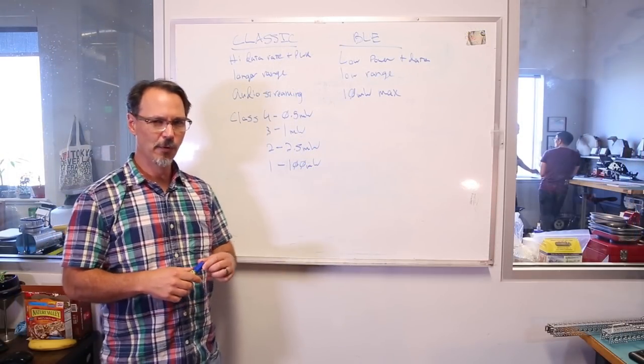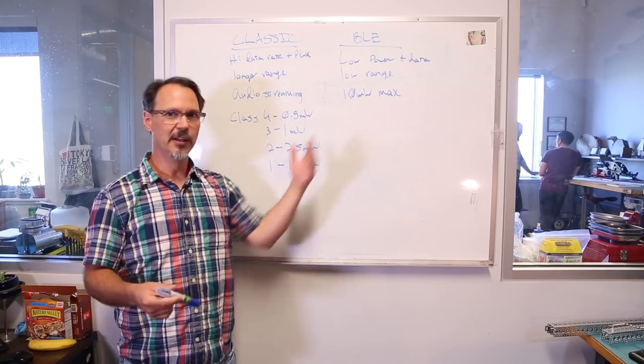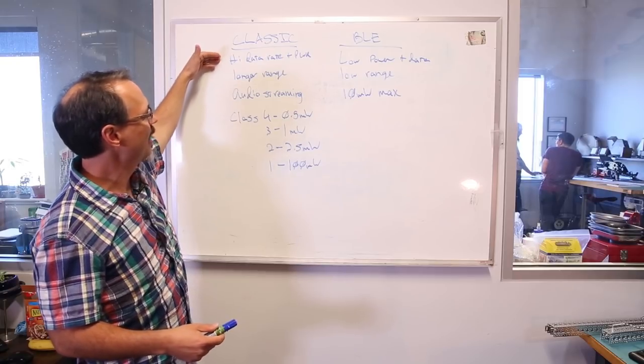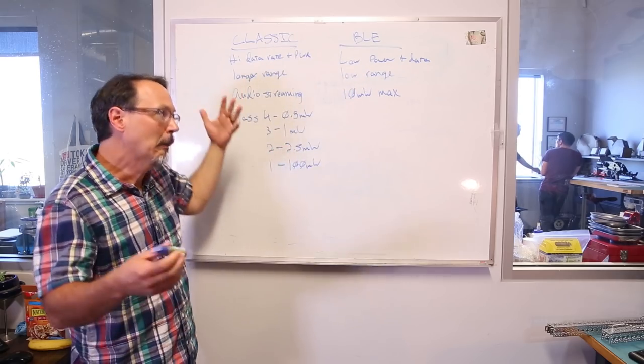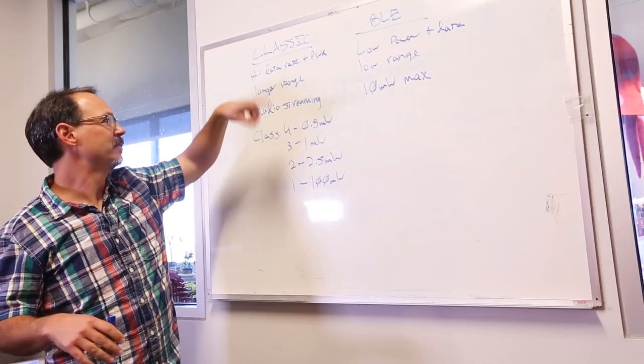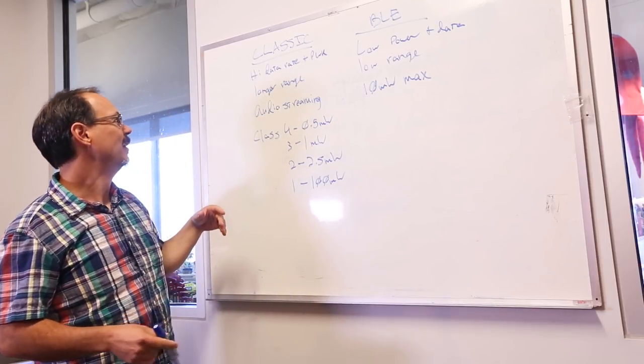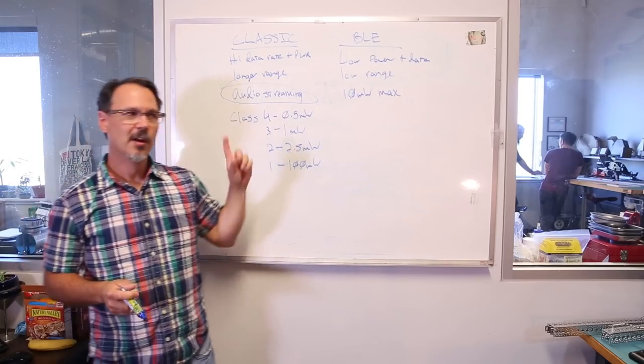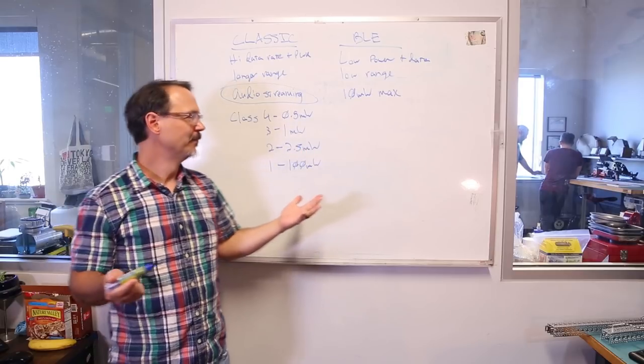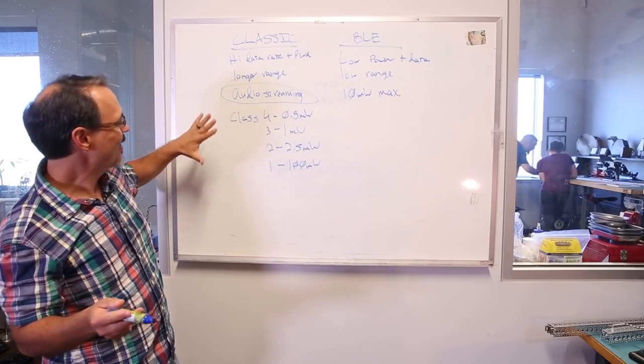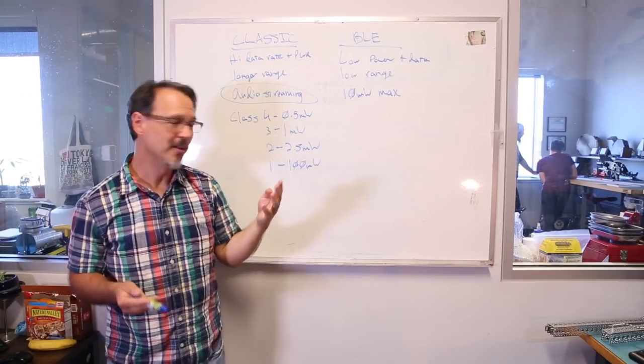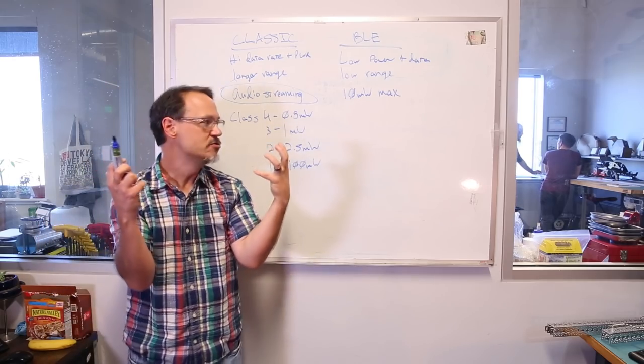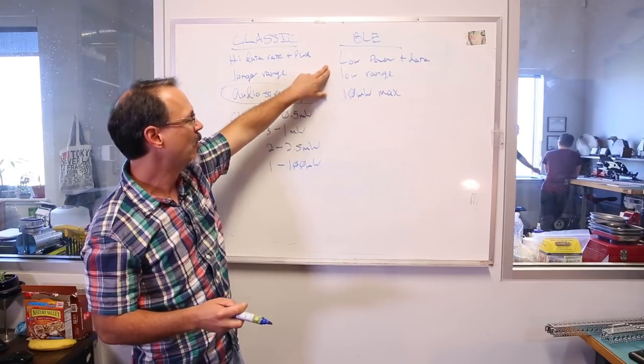So, let me illustrate for you a little bit some of the differences between classic Bluetooth and BLE, Bluetooth low energy. In general, generally speaking, classic is high data rate and higher power, where low energy is low data rate and low power. In general. Classic ends up being long range. Low energy is low range, obviously. Lower power, lower data rate. The big, the big thing seems to be this. Audio streaming. Classic can do audio streaming. Bluetooth low energy cannot do audio streaming. Yet.